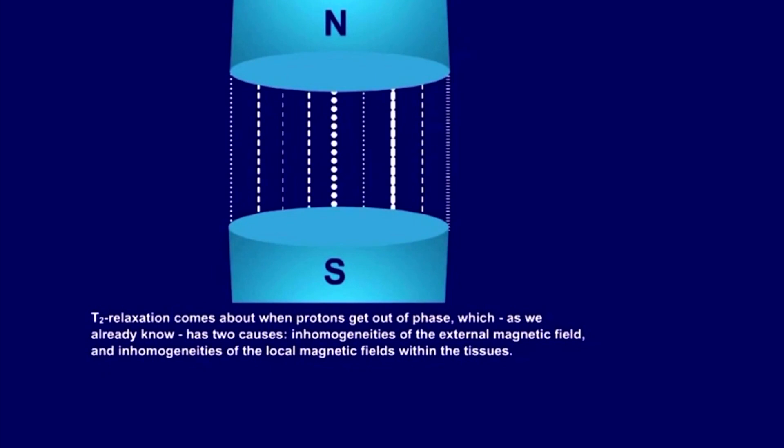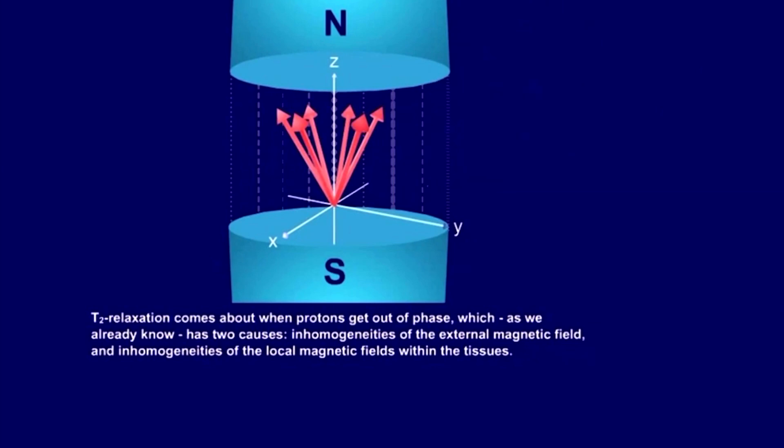Inhomogeneities of the external magnetic field and inhomogeneities of the local magnetic fields within the tissues.